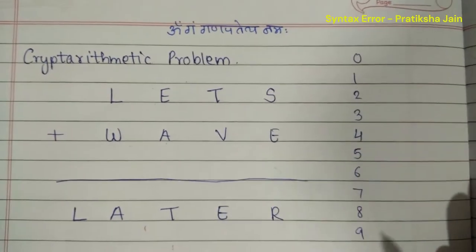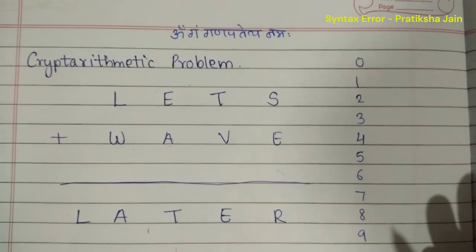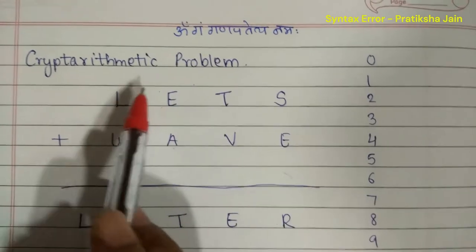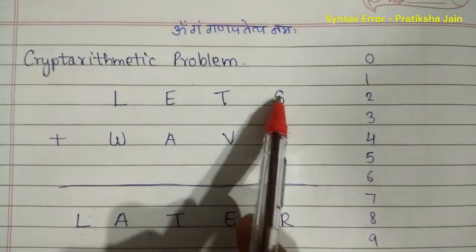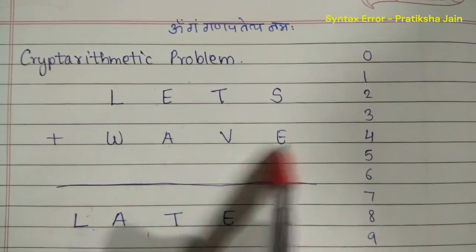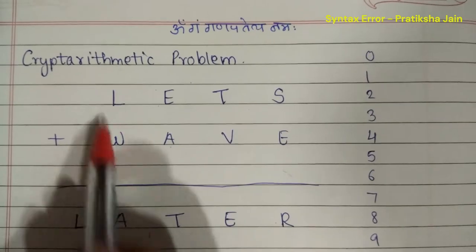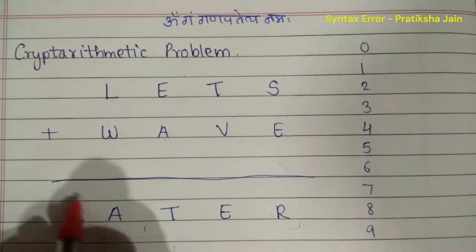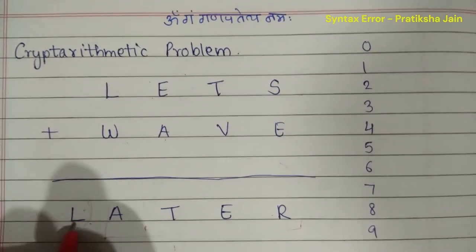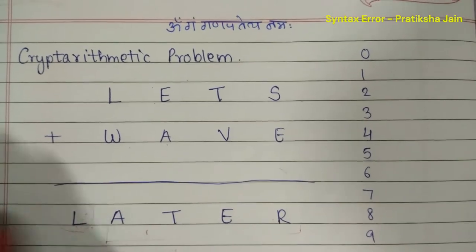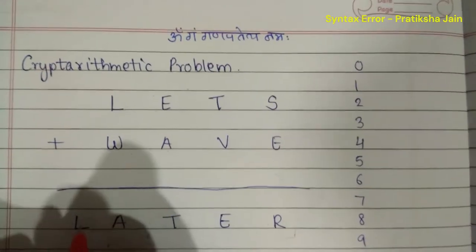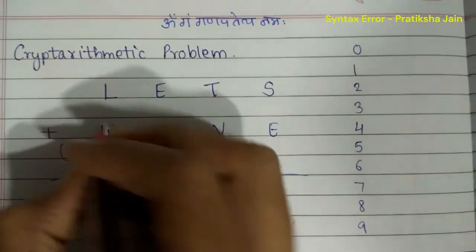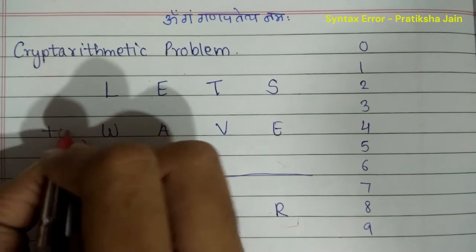If there is an extra letter — these are one, two, three, four letters on this side and also one, two, three, four on this side — so these four letters, and if you have an extra letter, then this is a carry. You should always keep it as one — this is a carry.